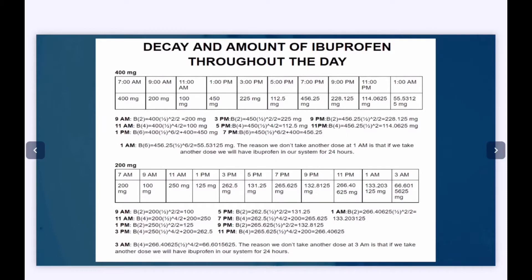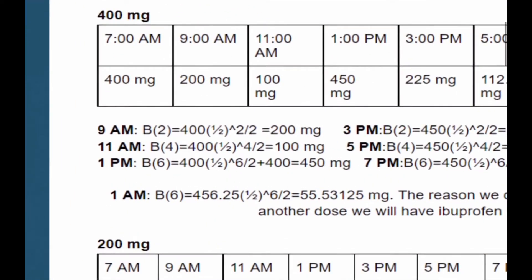For 400 mg, the formula is B(T) equals 400 times one-half to the power of T divided by two. At 7am we took an initial dose of 400 mg. At 9am two hours has passed, so we put T equals two and get 400 times one-half to the power of 2 divided by 2, which gives us 200 mg remaining. At 11am four hours has passed so we put T equals four and get 100 mg.